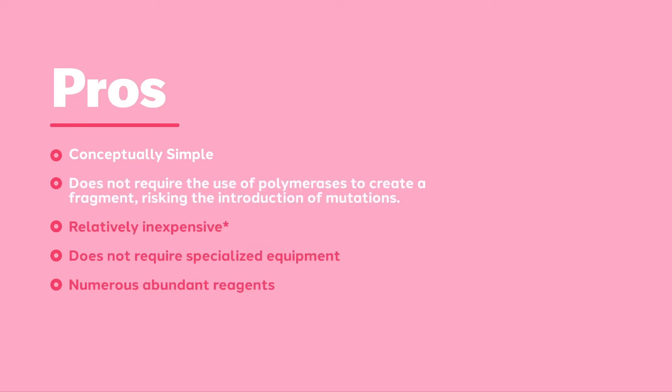These next three bullet points are related. Restriction enzyme cloning has been around a long time, and as a result, a great repository of reagents has been developed. For instance, the non-profit Addgene distributes over 90,000 plasmids from over 4,000 labs. Restriction cloning does not require specialized equipment, and most common restriction enzymes have become quite inexpensive to purchase. While the reagents can be inexpensive, time is costly — and this brings us to the challenges associated with restriction enzyme cloning.